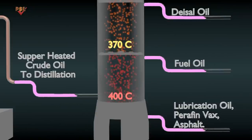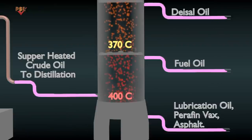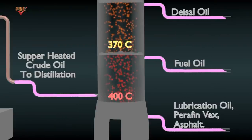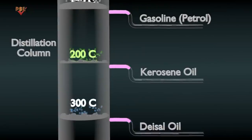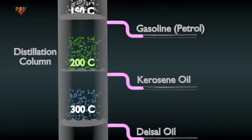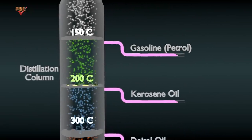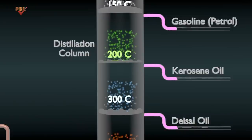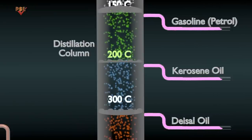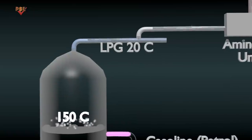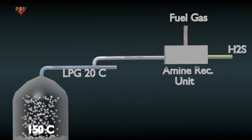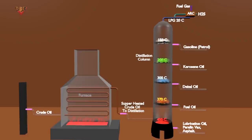Components that are still liquid at this elevated temperature become the tower's bottom product. Components that are in vapor form rise up the tower through a series of distillation stages. The temperature decreases as the vapors rise through the tower and the components condense.